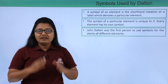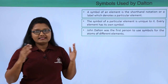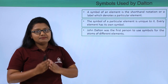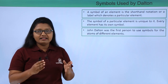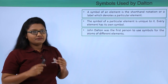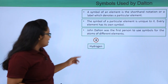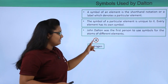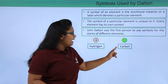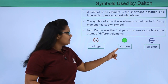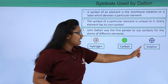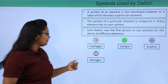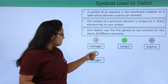According to Dalton, an atom was a solid sphere, and he made use of this idea when he allotted symbols to different elements — meaning every symbol he allotted had a circle in it. For example, a hydrogen atom had a circle with a dot at the center, a carbon atom was a solid circle, and a sulfur atom was a circle with a cross inside.